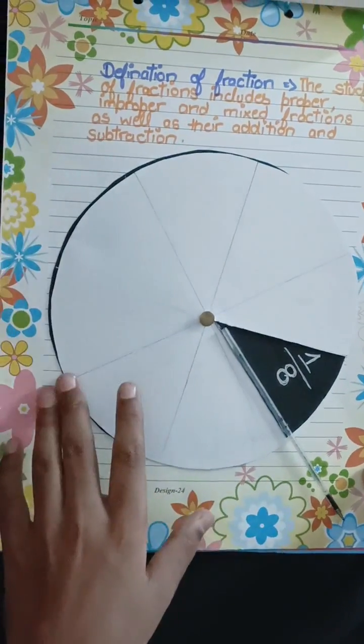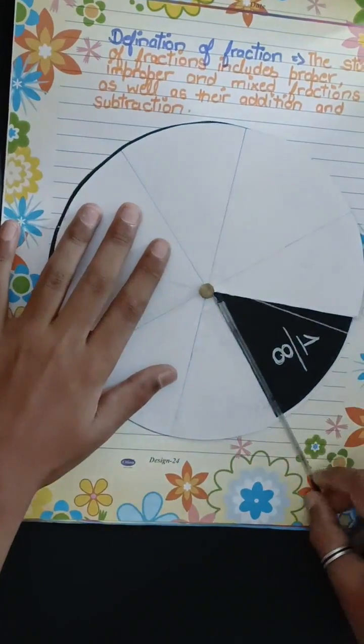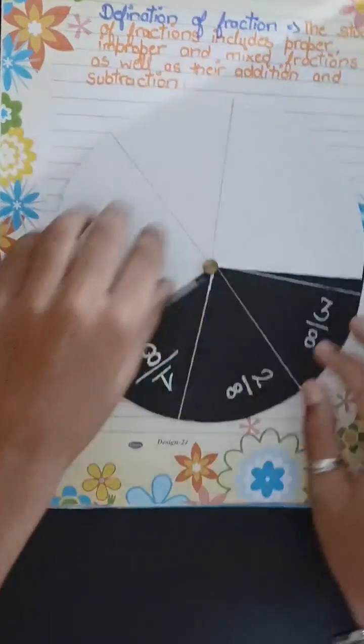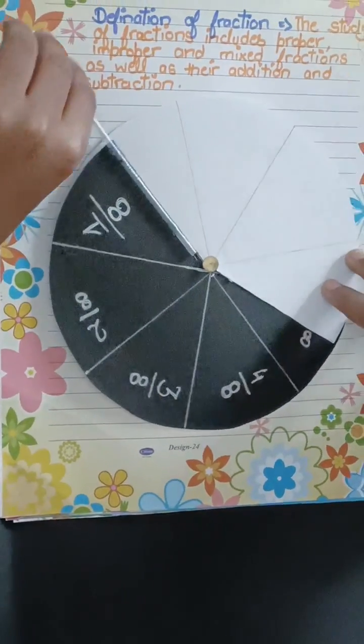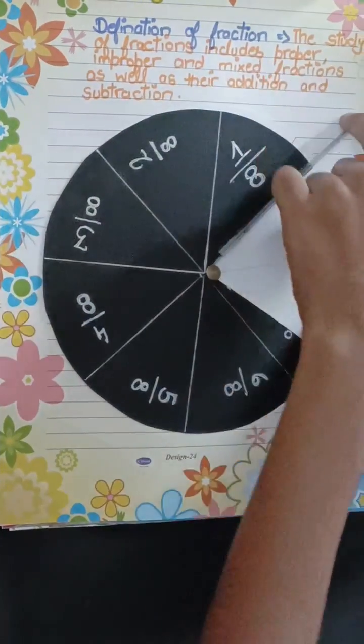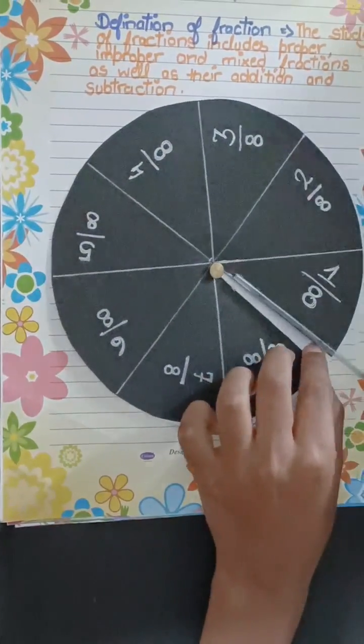Then model of fraction. This is 1 by 8, then 2 by 8, then 3 by 8, and 4 by 8, 5 by 8, 6 by 8, 7 by 8, and 8 by 8.